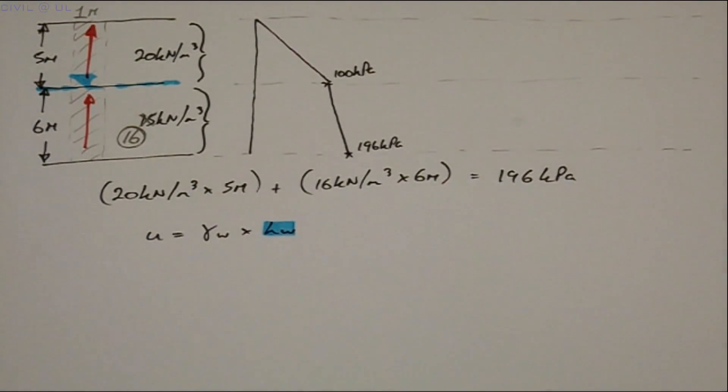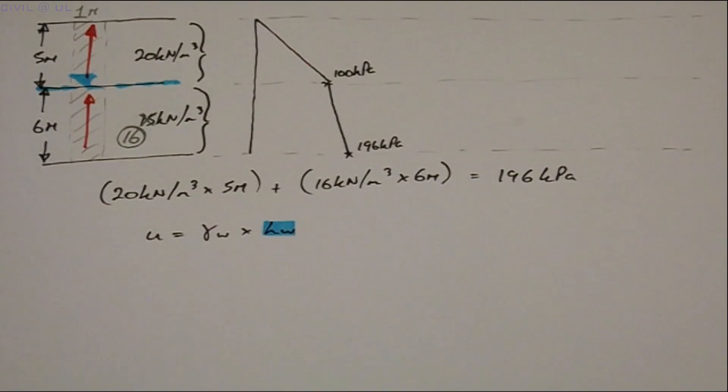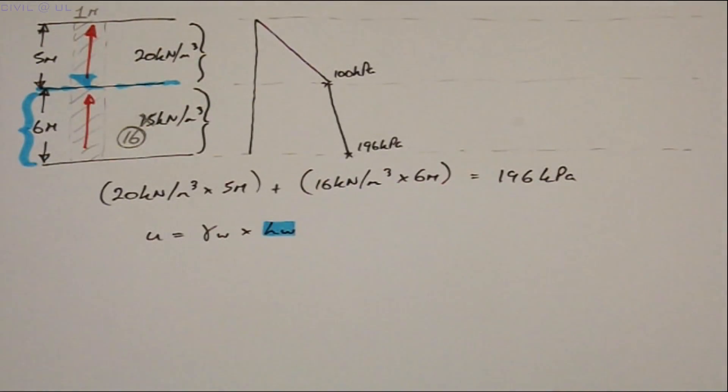The height of water is thus a critical measurement and is often determined by recording the depth of water in a standpipe.